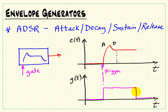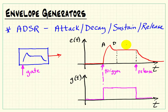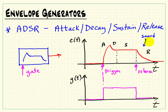This constant region is called the sustain region, and it remains active for the entire duration of the key press. As soon as we release the key, we initiate the release phase — the fourth phase of the envelope — and the signal returns back to zero. This way we can generate a sound that will persist as long as we have the key being pressed, which is desired for things like wind instruments, like a trumpet. You want it to stay on as long as you're pressing the key.